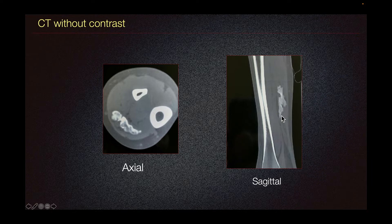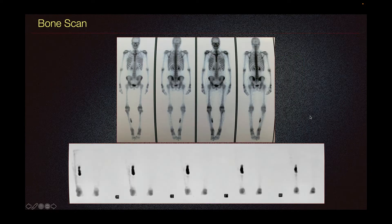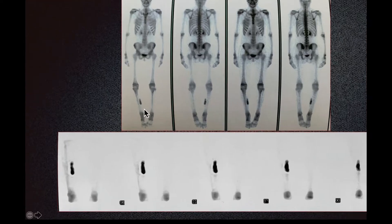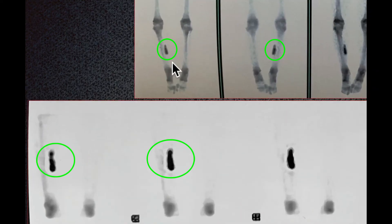This curvilinear calcification in the gastrocnemius muscle is also seen on the sagittal imaging. The patient underwent bone scan, which demonstrates increased uptake in the right posterior calf.